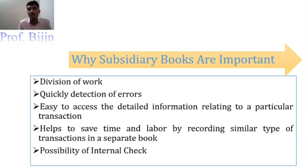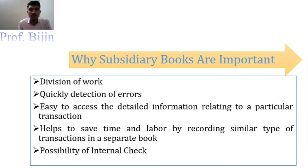The next advantage is quick detection of errors. In the general journal, thousands of transactions are all together, but in subsidiary books, all sales transactions are in the sales book, all purchase transactions are in the purchase book, and all payment and receipt transactions are in the cash book. So if there is a problem, we identify the category and check directly — sales go to the sales book, purchase issues go to the purchase book — making error detection easy.